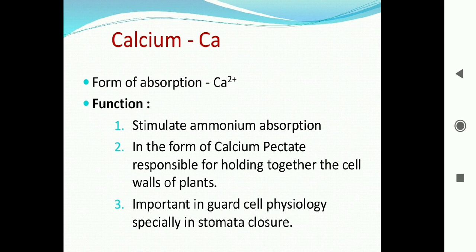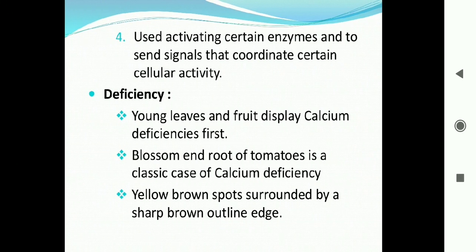The process of transpiration depends upon the turgidity of guard cells. Guard cells open and close on the basis of whether they are turgid or flaccid. Calcium plays a very important role in maintaining this closure and opening of stomata.